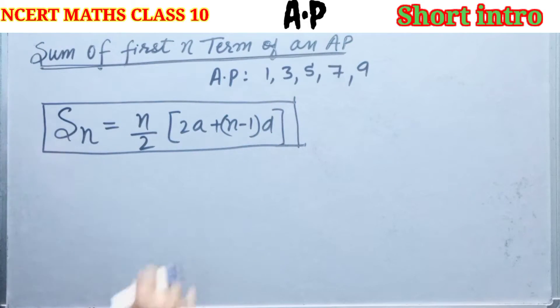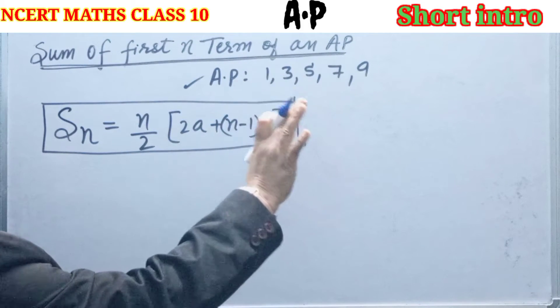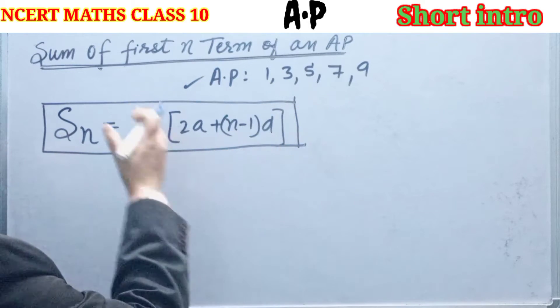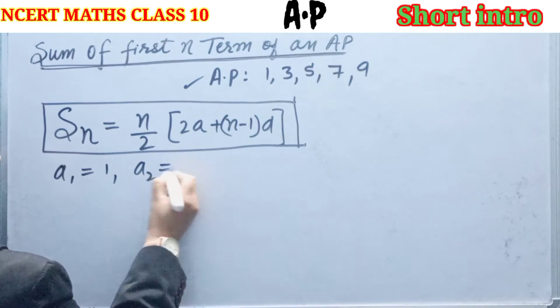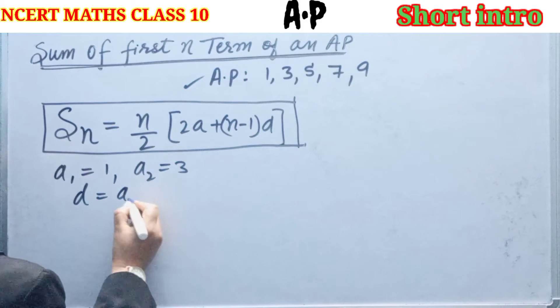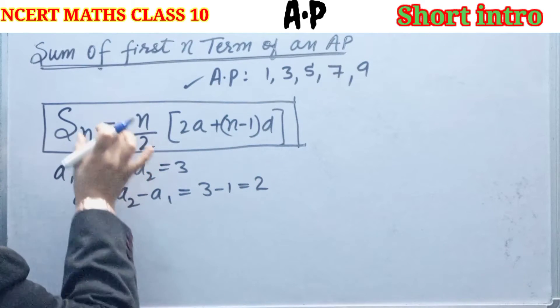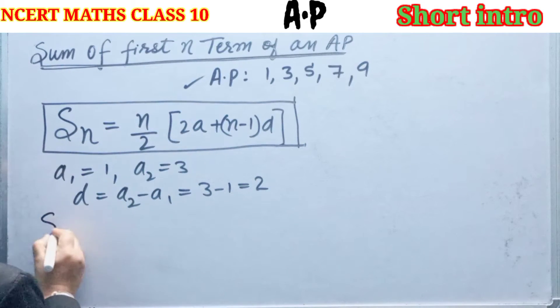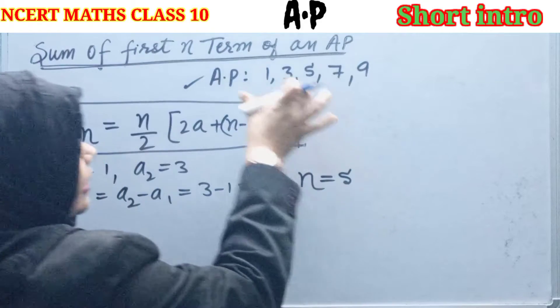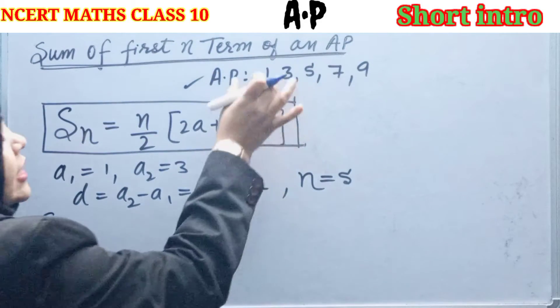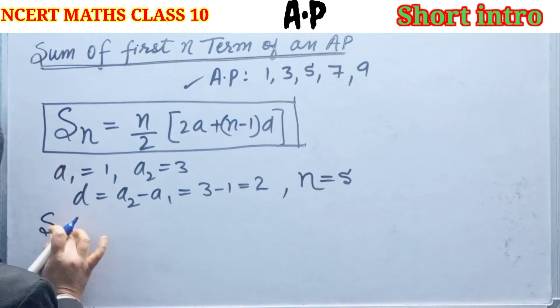Suppose that this is the given AP. A1 equals to 1, A2 equals to 3. Then D will be common difference, A2 minus A1, 3 minus 1 equals to 2. Now we have to find the sum of this AP. We have 5 terms. Number of terms is 5. We have to find the sum of first 5 terms of AP.